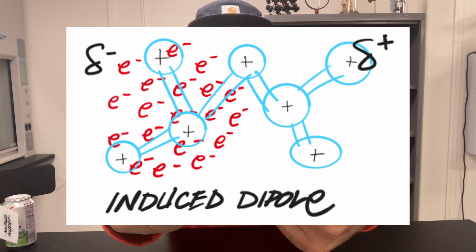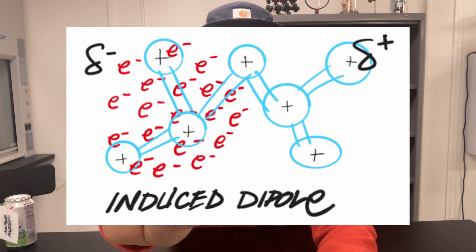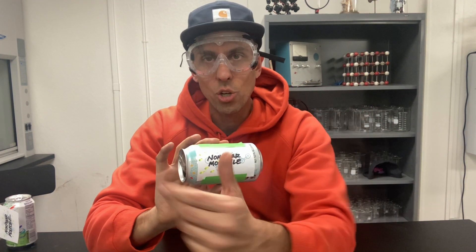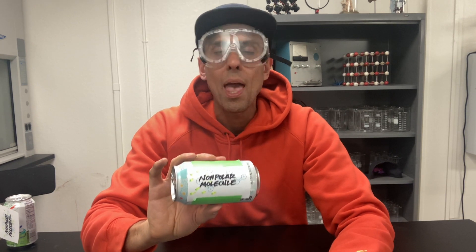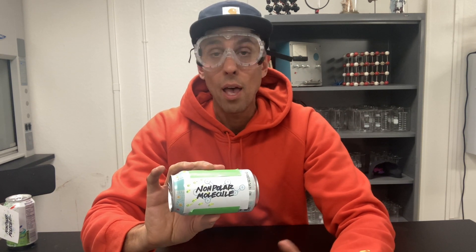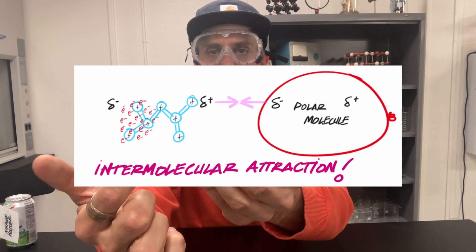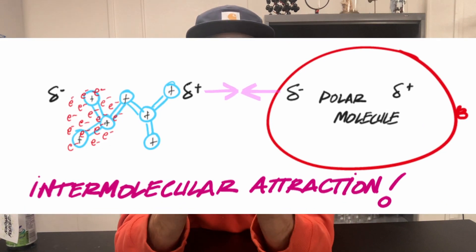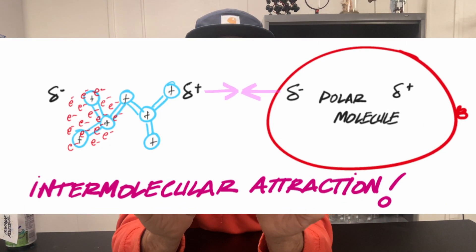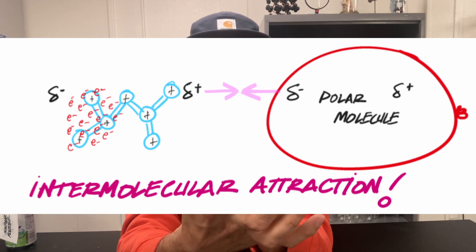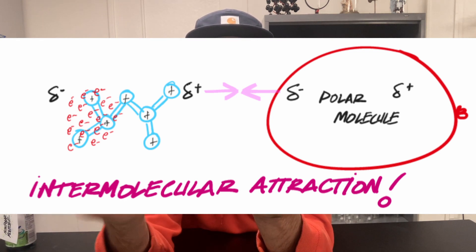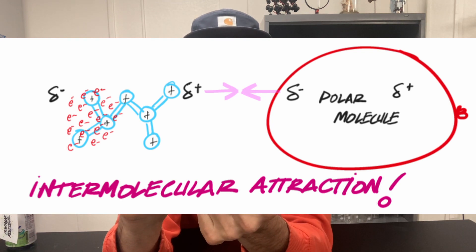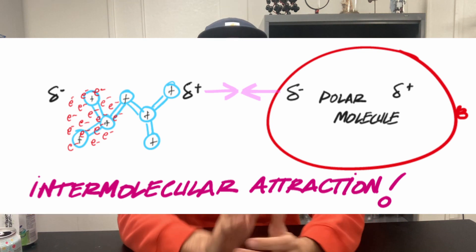What you see on the near end of the molecule is just the positive nuclei within the atoms. Not all the electrons are pushed all the way over — it might just be the valence electrons — but it doesn't matter. By pushing the electrons over to the other side, this non-polar molecule temporarily has a negative end and a positive end. The positive end of the molecule is then going to be attracted to the negative end of our polar molecule. That's how an induced dipole works.